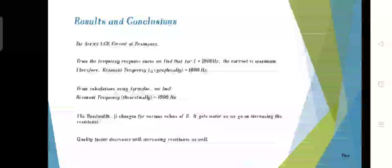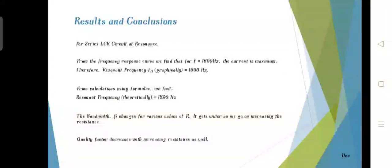Results and conclusion. For series LCR circuit at resonance, for the frequency response current, we find that frequency equals 1600 Hz, the current is maximum. Therefore, resonant frequency graphically is 1600 Hz. For the calculation, using the formula, we find that resonant frequency theoretically is 1590 Hz which obeys the practical value. The bandwidth beta changes for the various values of R. It gets wider as we go on increasing the resistances. As the resistance increases, the bandwidth beta also increases. Quality factor decreases with increasing resistance as well.